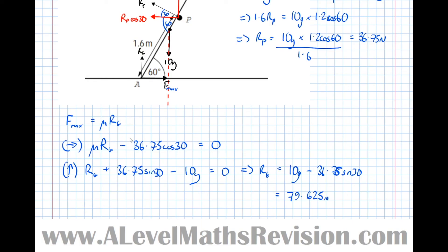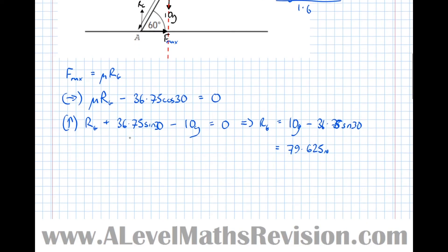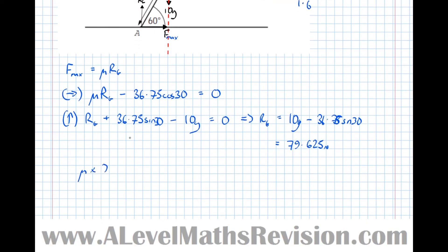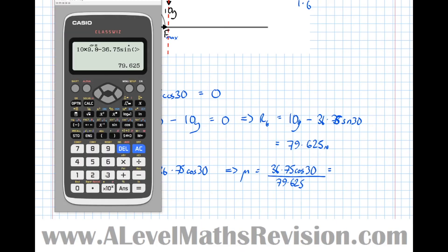We're almost there — there's now only one unknown. Substituting RG into the horizontal equation: μ × 79.625 = 36.75 cos 30, which means μ = (36.75 cos 30) / 79.625. Putting that into the calculator gives 0.3997, or approximately 0.400.